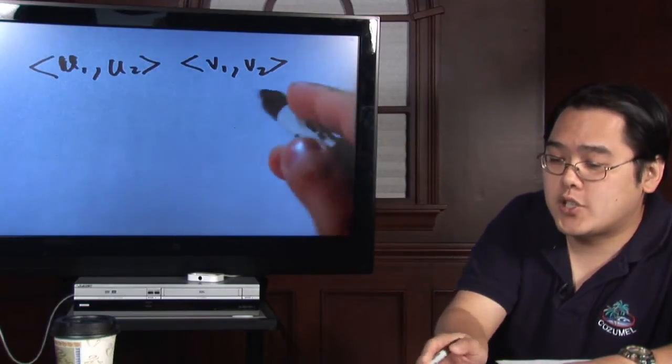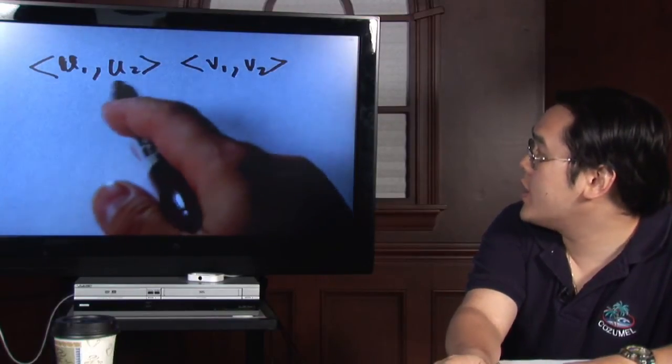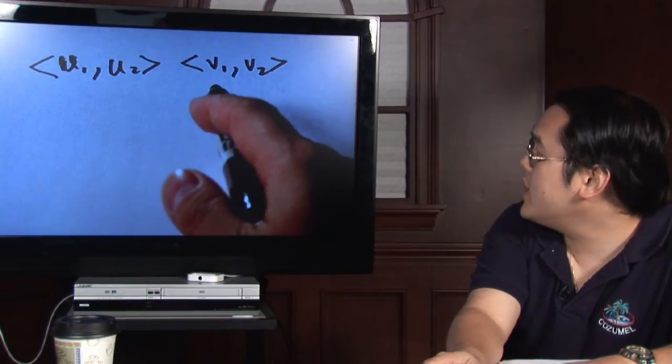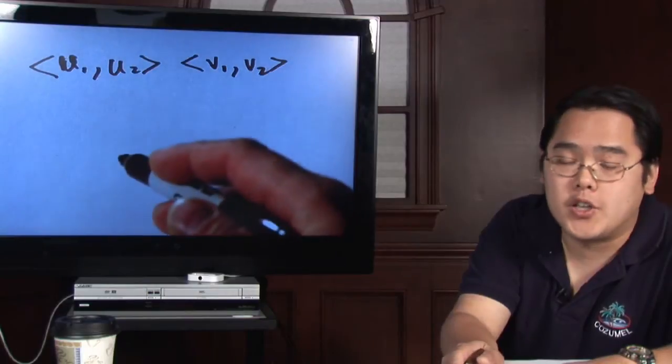I have here the basic structure of what two vectors would look like. The first vector is U₁ and U₂, and the second vector, which I'm going to call V, is V₁ and V₂. So here are some examples of U and V vectors.